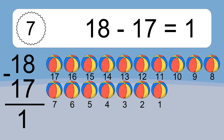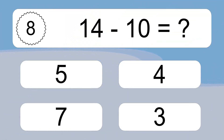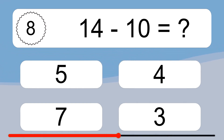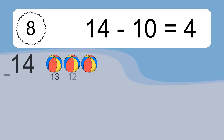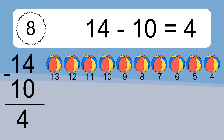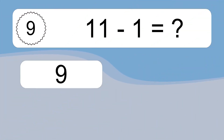14 minus 10 equals what? 14 minus 10 equals 4. Let's count it. 13, 12, 11, 10, 9, 8, 7, 6, 5, 4.